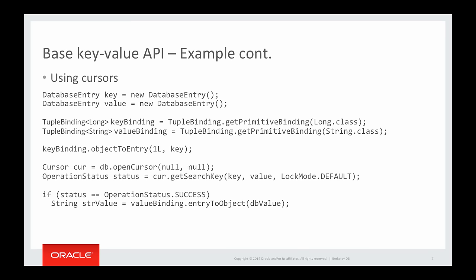To use cursors, first open the cursor handle with openCursor(). Then use getSearchKey() to move the cursor to the key-value pair you want to retrieve. If the search returns OperationStatus.SUCCESS, it means the key-value pair is found, and you can use a tuple binding to extract the value from the database entry.